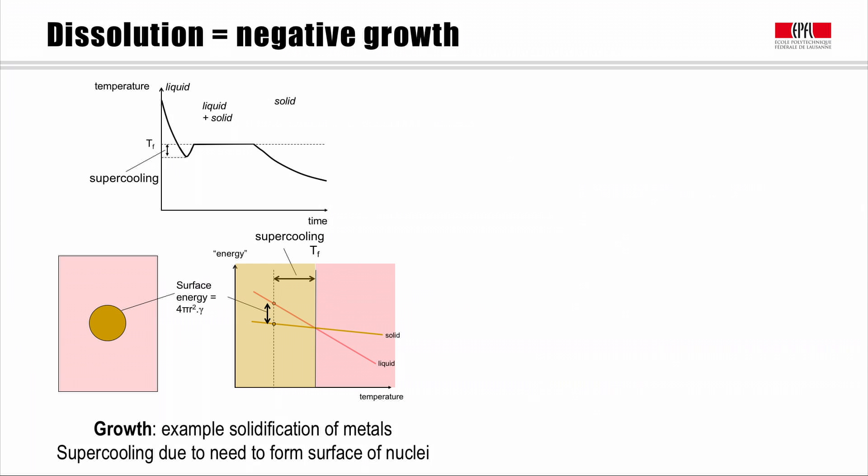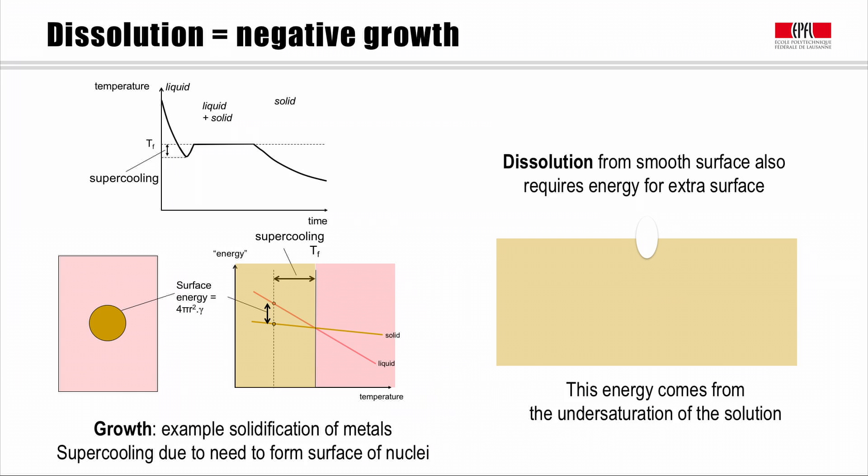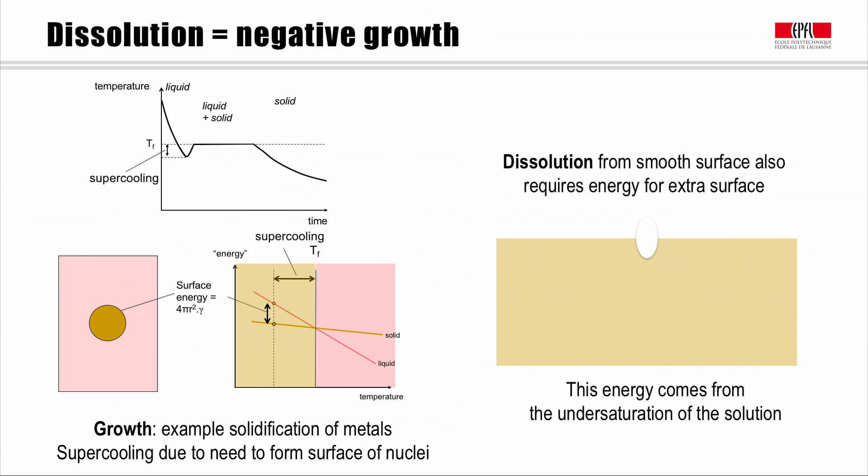Now, when we come to think about dissolution, if we have dissolution from a smooth surface, this is also going to require energy for forming the extra surface. So here we have imaginary surface, and here we have a little bit of dissolution going on, and dissolution means that we have to get this extra surface that is shown there. And in this case, this extra surface energy needs to come from the under-saturation of the solution. That's to say, if the solution contains less ions than it can do at saturation, it has a higher energy, it can be used to produce this extra surface. So this analysis has been developed quite rigorously in the field of geochemistry, and in the next slide, we see two examples from work published in this area.